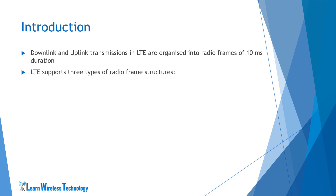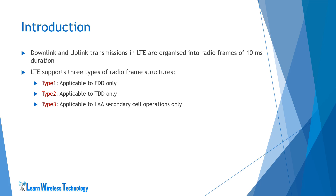LTE supports three types of radio frame structures: Type 1 frame structure, which is applicable to FDD only; Type 2 frame structure, which is applicable to TDD only; and Type 3 frame structure, which is used in LAA, i.e. License Assisted Access, as secondary cell operation only.